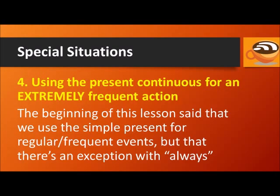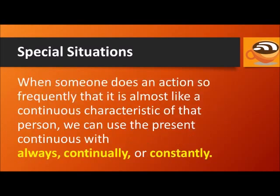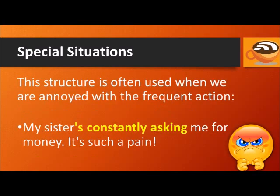A final special case is using the present continuous when talking about an extremely frequent action. The beginning of this lesson said we use the simple present for regular or frequent events, but there is an exception involving the word always. When someone does an action so frequently that it is almost like a continuous characteristic, we can use the present continuous with always, continually, or constantly. This structure is often used when we are annoyed with the frequent action.